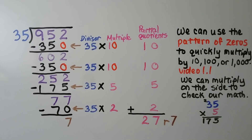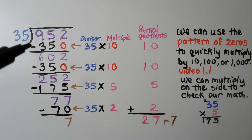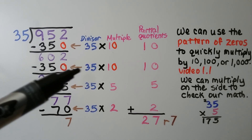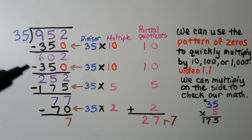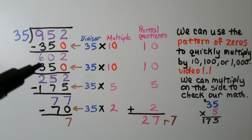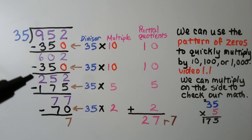Here we have 952 divided by 35. 35 times 10 is 350. We subtract it and get 602. We do another 35 times 10 and subtract another 350, getting 252. We can't subtract another 350 because it's too great to subtract from 252.